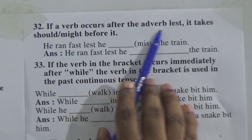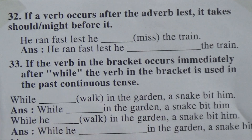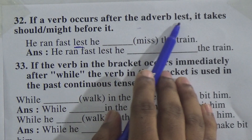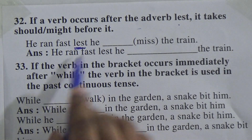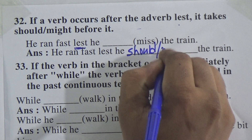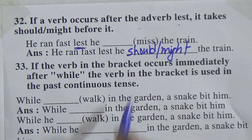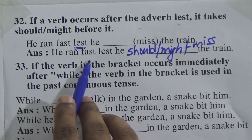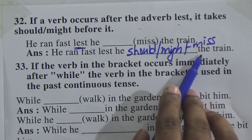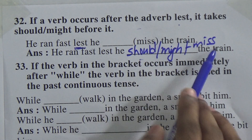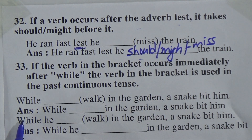Rule 32: if a verb occurs after the adverb 'lest', it takes should or might before it. If 'lest' appears in a sentence, after the subject we give should or might, and after should/might we use the present form of the verb. Example: 'He ran fast lest he should miss the train.' — if 'lest' comes, after the subject put should or might, then the base form of the verb.